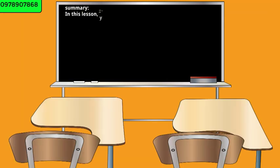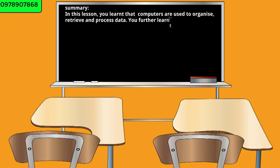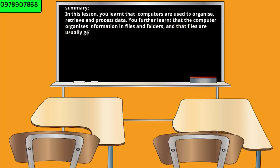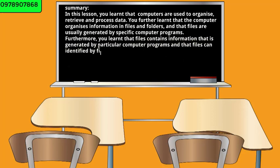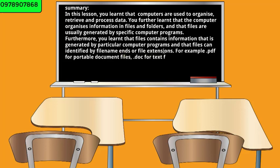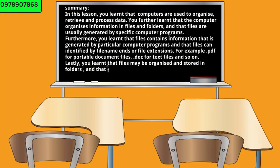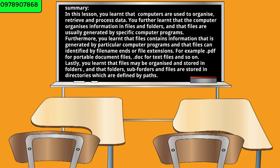Summary. In this lesson, you learnt that computers are used to organize, retrieve and process data. You further learnt that the computer organizes information in files and folders, and that files are usually generated by specific computer programs. Furthermore, you learnt that files contain information generated by particular computer programs and that files can be identified by file name or file extensions — for example, .pdf for portable document files, .doc for text files. Lastly, you learnt that files may be organized and stored in folders, and that folders, subfolders and files are stored in directories which are defined by paths.